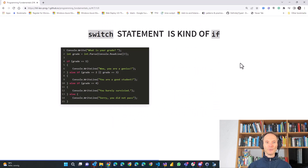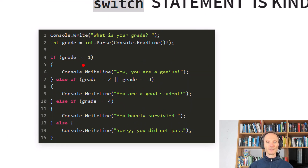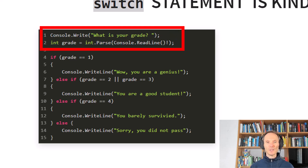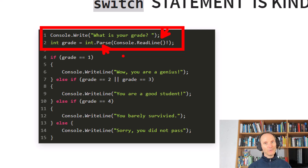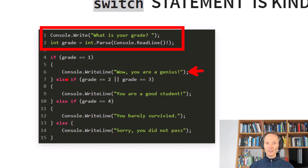Let me zoom in a little bit so you can see it better. In the first two lines we are asking the user for an input — first we say 'what is your grade?', then we use the readline statement together with the int.parse function, which turns the string input into an integer. If you're not from Austria, in Austria we have five grades: one is the best and five is unfortunately not so good. So we give textual feedback using an if statement — if the grade is one, print 'wow you're a genius'; else if grade is two or three, print 'you're a good student'; if the grade is four, a different message; and else 'sorry you did not pass.'